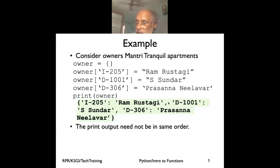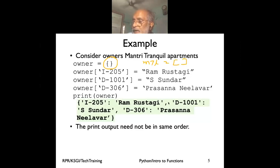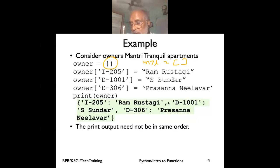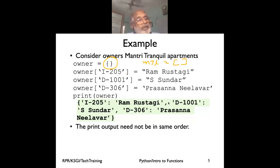Dictionaries are initialized using curly braces. An empty list uses square brackets, but an empty dictionary uses curly braces. However, accessing elements always uses square brackets - in a list you give the index value 0, 1, 2, 3, but in a dictionary you give the key. For example, I define a dictionary called 'owner' where the key is a flat number.